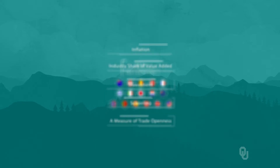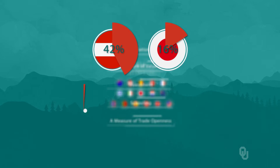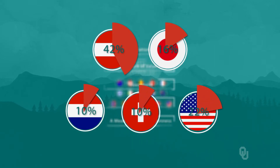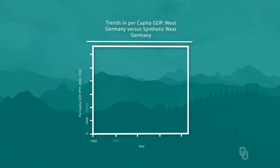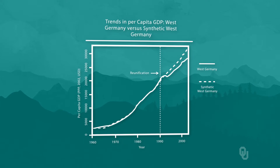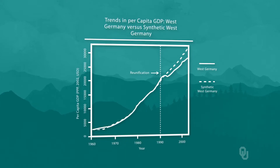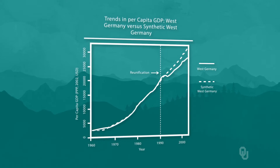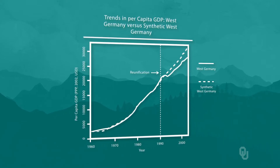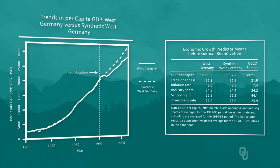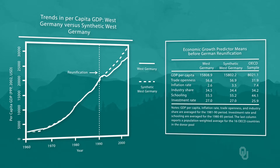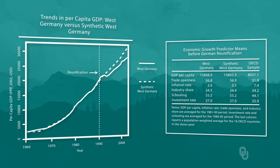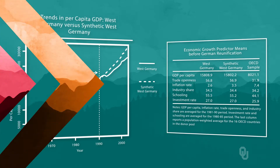Their estimated synthetic West Germany was 42% Austria, 16% Japan, 10% Netherlands, 10% Switzerland, and 22% the USA. Here's a graph showing their results. As can be seen, the pre-treatment fit is very close — the synthetic control tracks actual West Germany extremely well. After reunification, though, West Germany underperforms the control by about 12% at the end of the period. Here is the table checking for matching on the economic characteristics. By comparing the first two columns, it becomes clear that the synthetic control matches West Germany quite well on the chosen economic characteristics. So in this paper, we see a terrific example of what we want our synthetic control to do, which is closely track the actual outcome variable pre-treatment and closely match on the chosen characteristic variables.